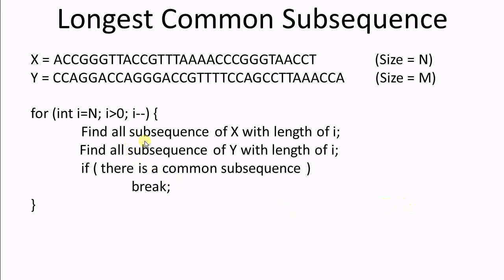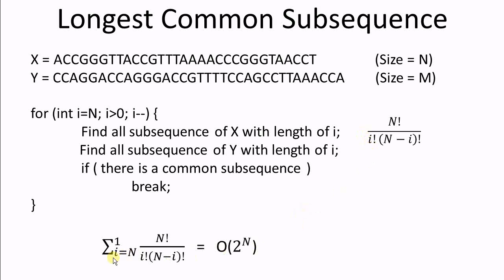So this algorithm is simple and straightforward. We know it will work. The problem is, how complex is this algorithm? Let's consider how many subsequences x has with the length of i. The worst case complexity of this for loop is a summation of this formula for every i, and this is exponential in n. So this algorithm is very complex and we cannot afford it. We have to find a better algorithm.